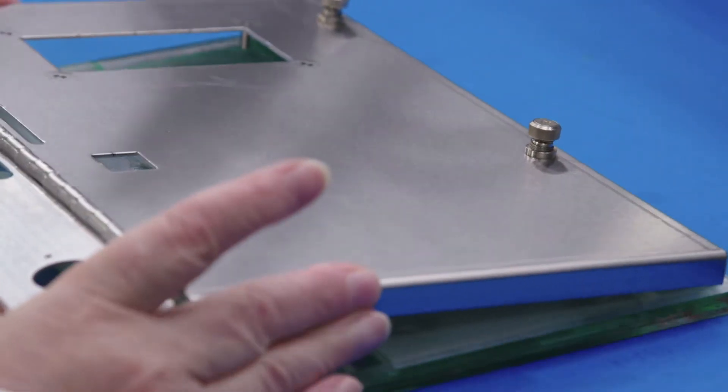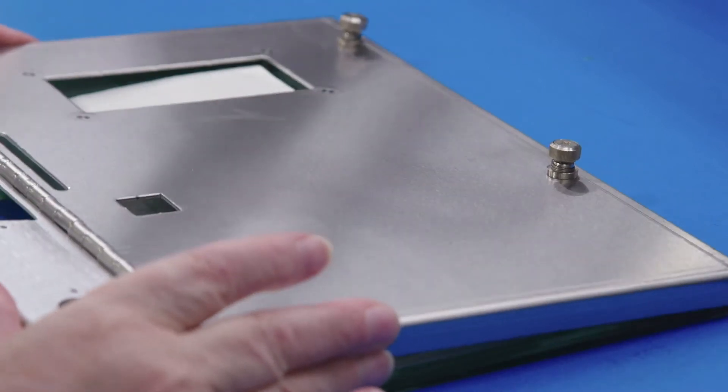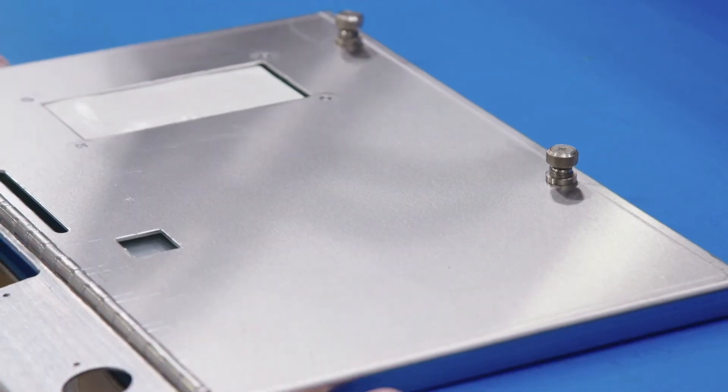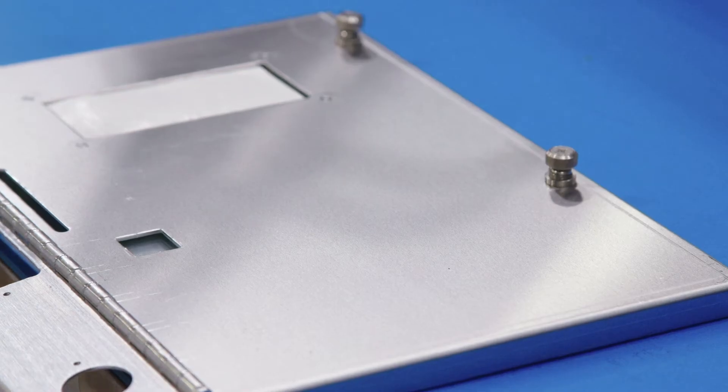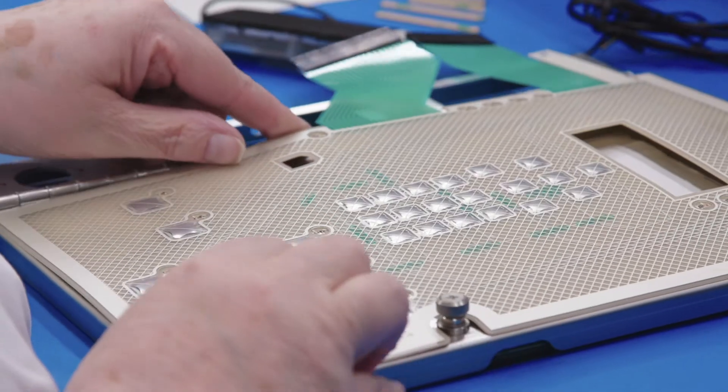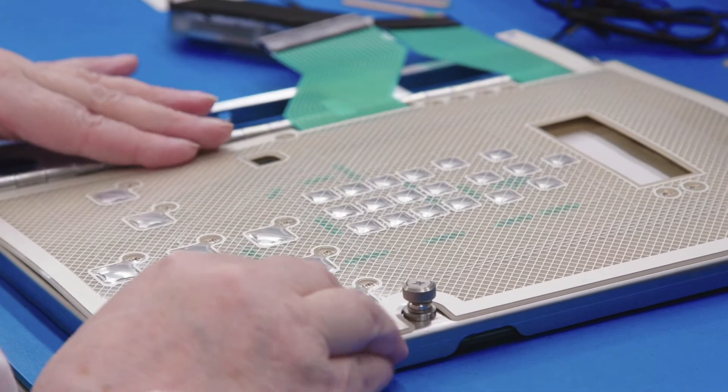As you can see here, the door, aluminum door assembly, that the membrane switch is going to be applied to is laid into the fixture. One of the key aspects of this fixture is the center portion that's been built up to support the LCD display window area when we apply the membrane switch.